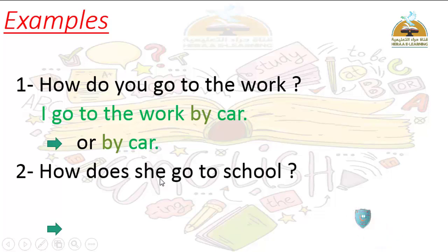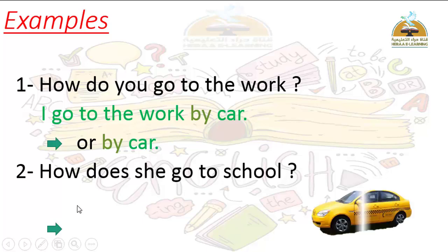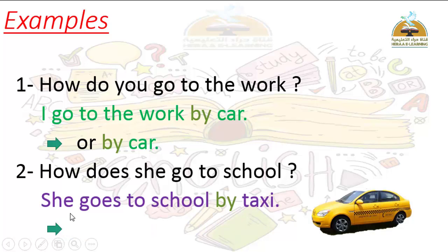Number two: How does she go to school? — meaning كيف هي تذهب إلى المدرسة. Here the question word is How, the helping verb is Does because the subject is She. After that: subject She, then verb go, then the rest, with a question mark. For the long answer: start with subject She. The verb can't stay as 'go' — it must be 'goes' because this is present simple with She, and the verb ends in O, so we add ES.